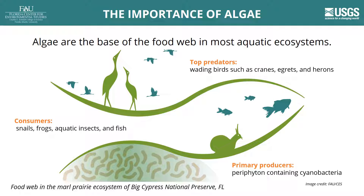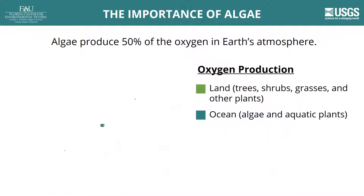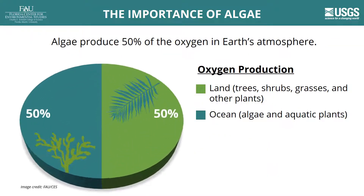Without algae, many aquatic ecosystems would collapse. Algae are estimated to produce 50% of the oxygen in Earth's atmosphere, even though they make up less than 1% of photosynthetic biomass on Earth. This oxygen is produced as a byproduct of photosynthesis. Cyanobacteria produced the first oxygen on Earth billions of years ago. Even the oxygen you breathe in the middle of the United States is produced by algae in the ocean.